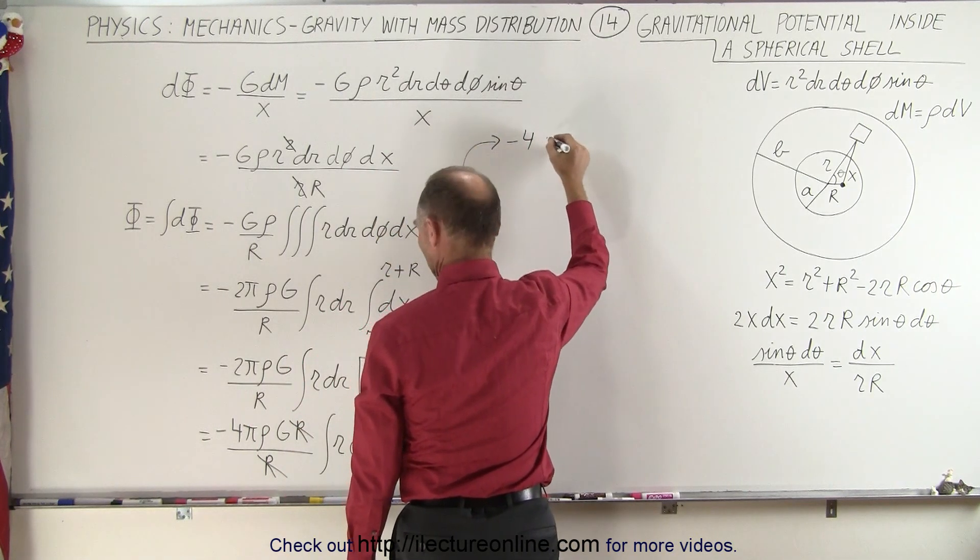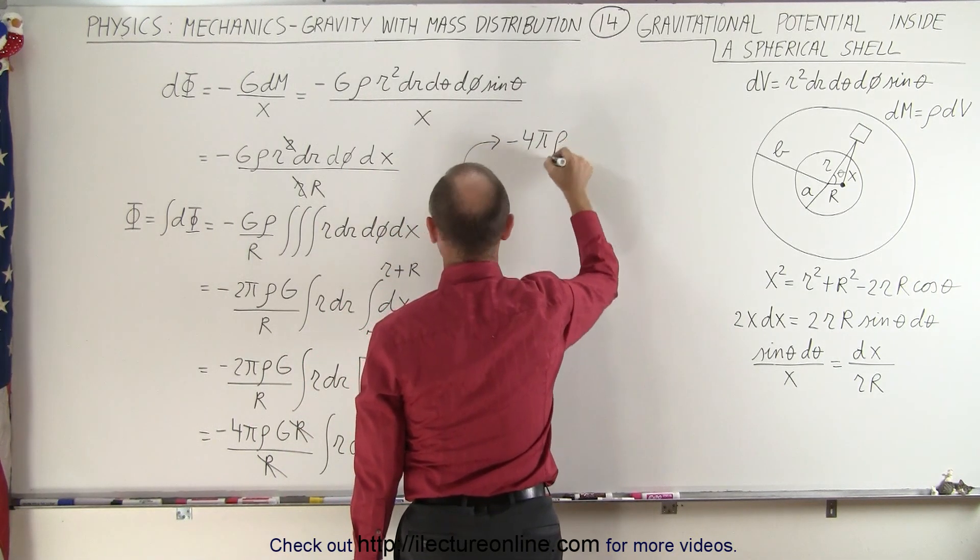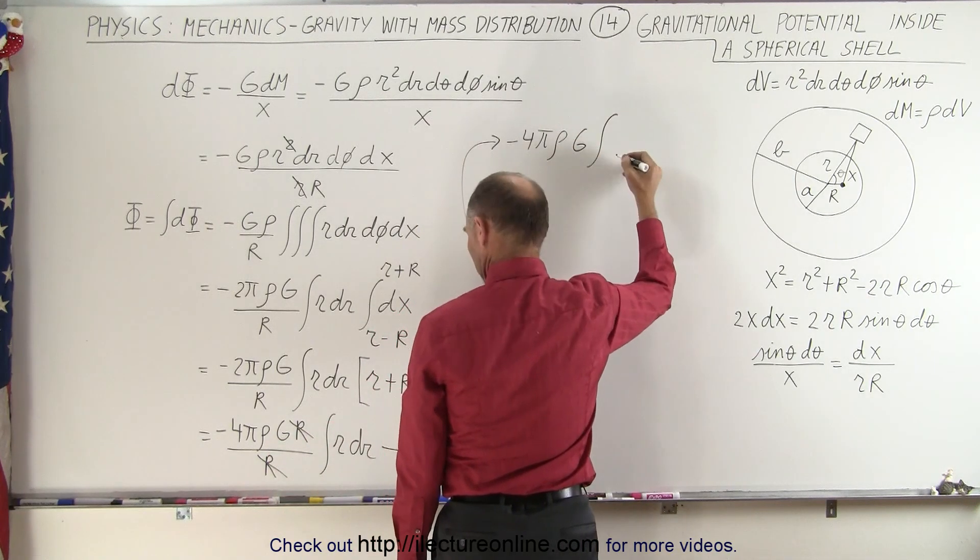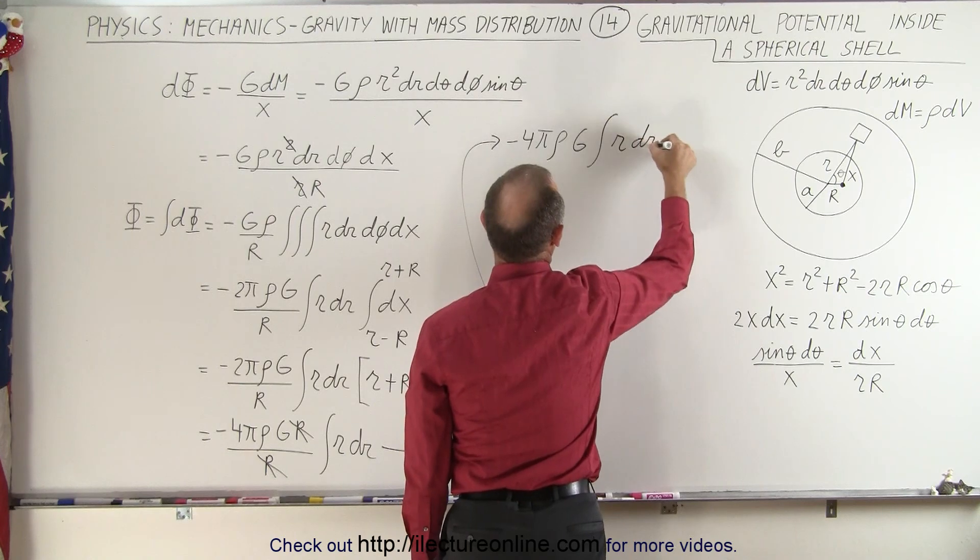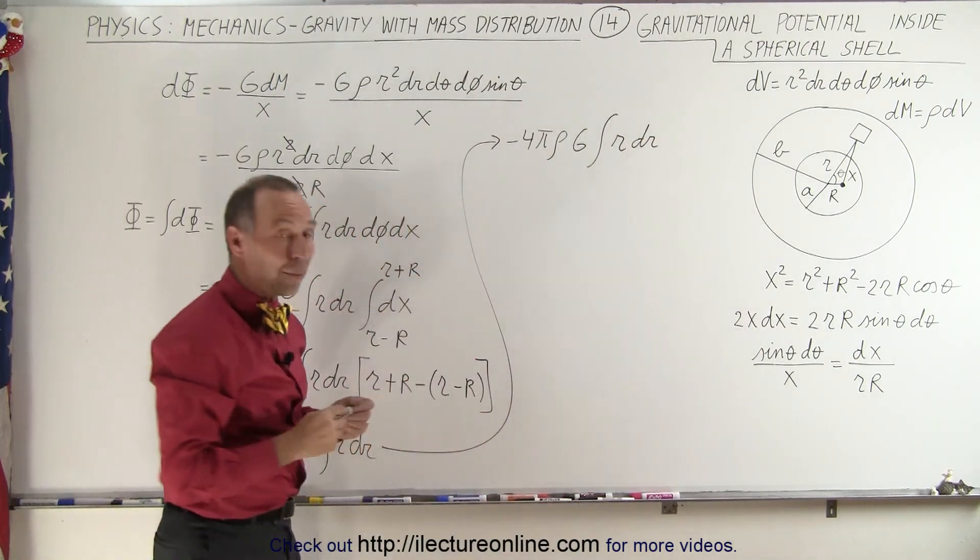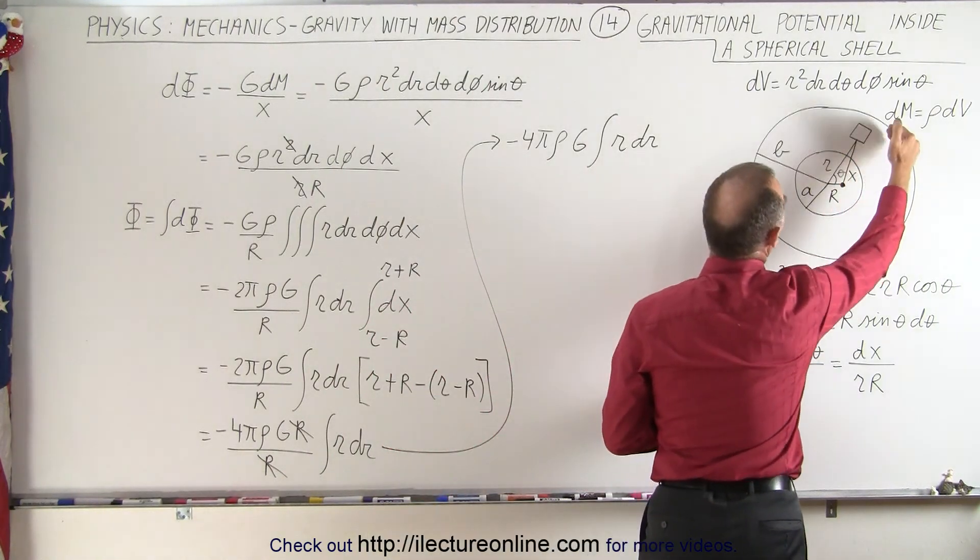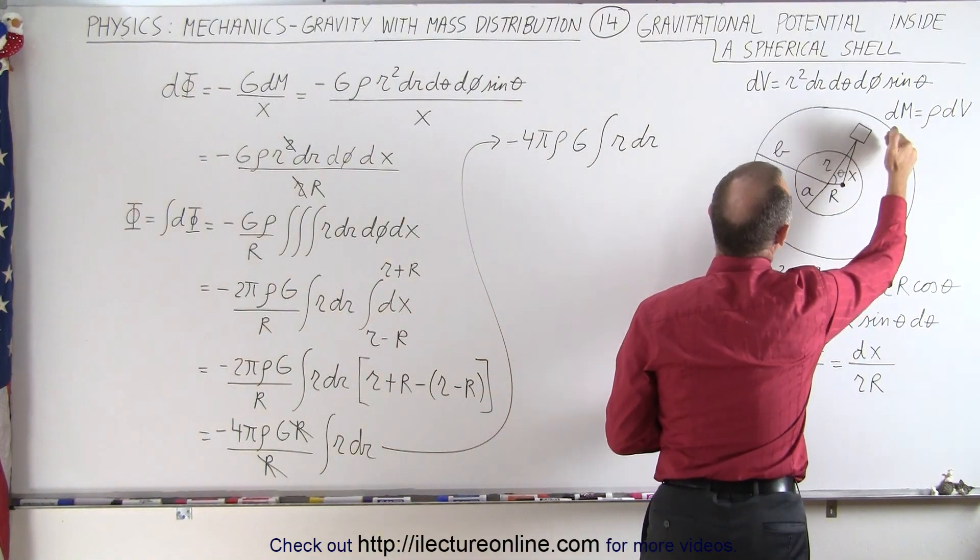So now we have minus 4 pi times density times g times the integral of r dr. So it's a little cleaner right here, but now we need the limits of the variable r. And of course, that will be from the inner radius to the outer radius, which means from a to b.